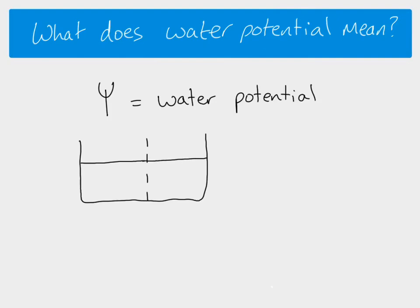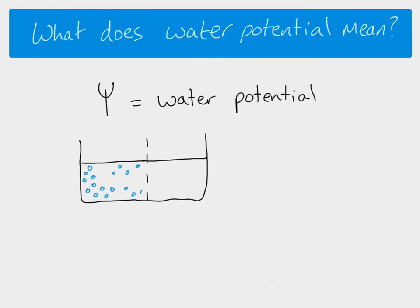So if we have a situation like this, we've got some sort of container and this dotted line represents a semi-permeable membrane, just like the semi-permeable membrane that you get around cells — so this is a bit like the cell surface membrane. On one side we have a solution with lots and lots of water molecules and maybe just a couple of solute molecules, and on the other side we've got a solution with far more solute molecules. This is what we would say is a more concentrated solution, and on the left a more dilute solution.